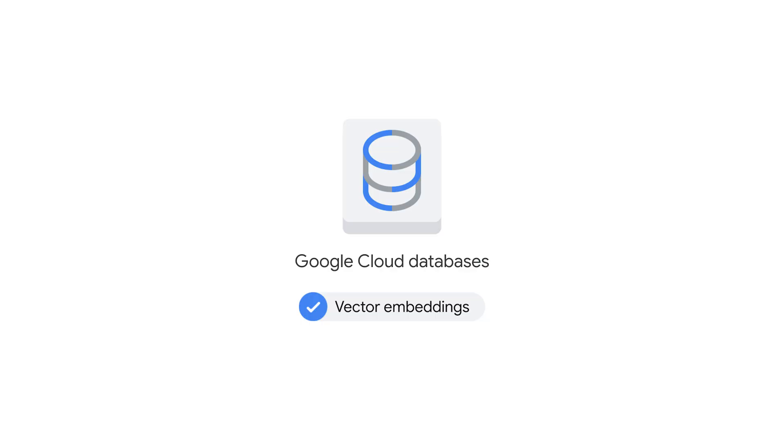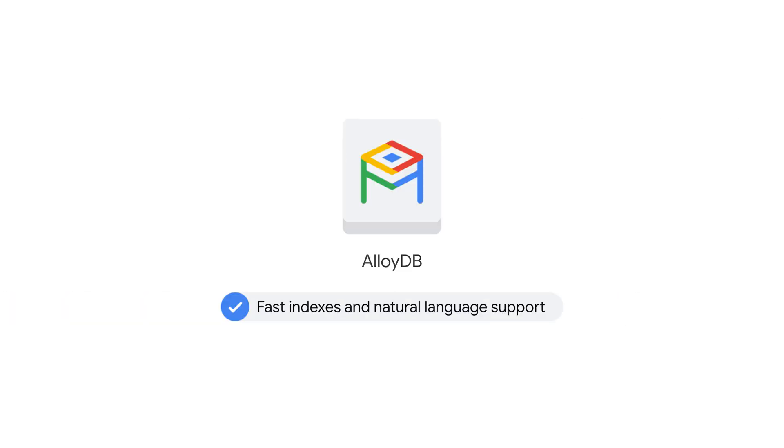Or perhaps you're working with large language models and need the most up-to-date data possible. All Google databases support vector embeddings, but AlloyDB goes a step further by supporting the fastest indexes and natural language support. Vector-enabled databases like AlloyDB can embed the semantic meaning in unstructured data and store them as vectors, enabling high-quality semantic search from directly within the database.